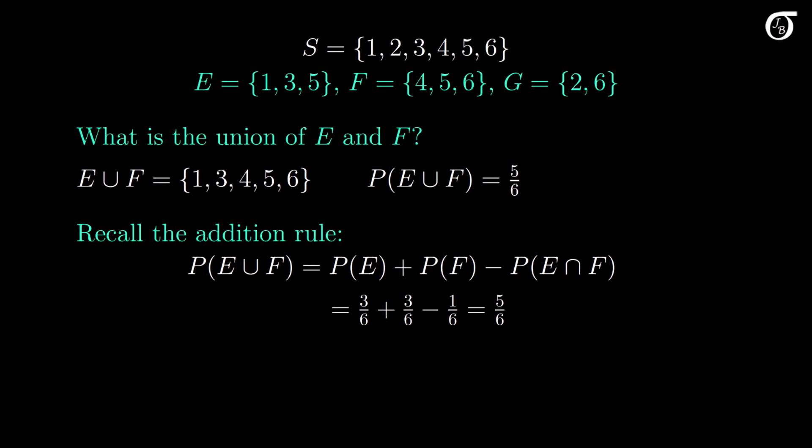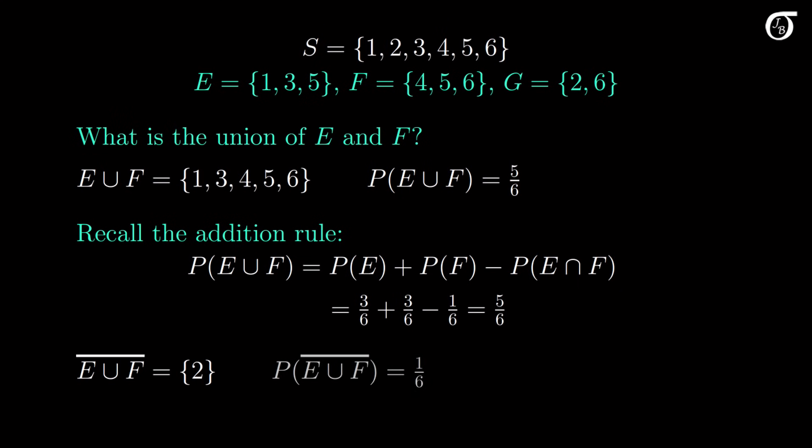If we were interested in the complement of E union F, that would simply be the number 2, as that is the only point in the sample space not in E or F. The probability of that complement is 1 out of 6.